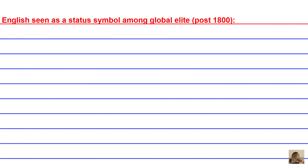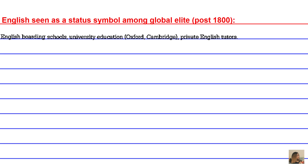English being seen as a status symbol among global elites post-1800 is another reason for the worldwide spread of English. This includes English boarding schools, university education at Oxford and Cambridge, and private English tutors — all status symbols.